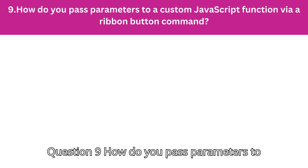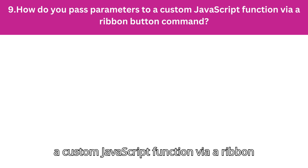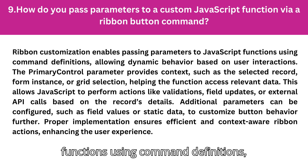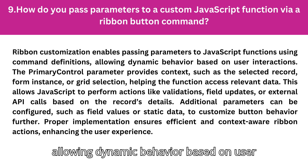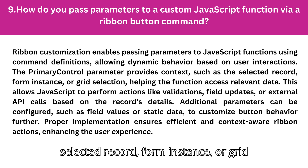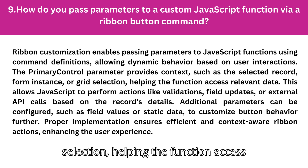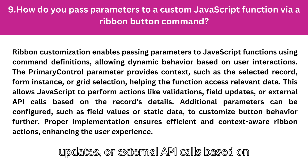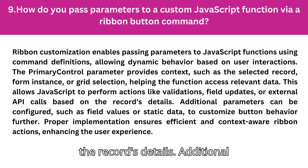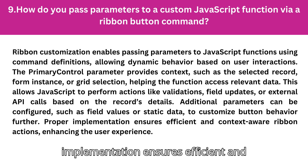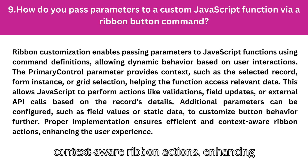Question 9: How do you pass parameters to a custom JavaScript function via a ribbon button command? Ribbon customization enables passing parameters to JavaScript functions using command definitions, allowing dynamic behavior based on user interactions. The primary control parameter provides context such as the selected record, form instance, or grid selection, helping the function access relevant data. This allows JavaScript to perform actions like validations, field updates, or external API calls based on the record's details. Additional parameters can be configured, such as field values or static data, to customize button behavior further. Proper implementation ensures efficient and context-aware ribbon actions, enhancing the user experience.